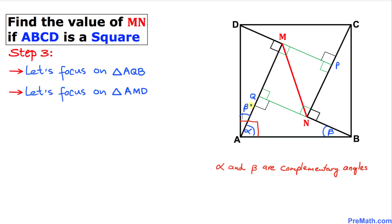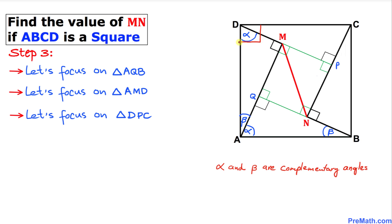In right triangle AQB, where one angle is 90° and another is alpha, the remaining angle is beta. Focusing on right triangle AMD: one angle is beta and 90°, so the complement of beta is alpha. Then in triangle DPC, the angle is beta and 90°, so the complement of beta is alpha.